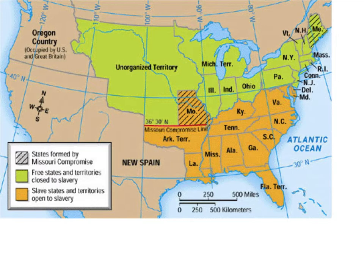The reason that balance matters is because each state has a certain number of senators and congressmen. If slave states outnumber free states, pro-slavery forces will control the agenda. Whereas if the Northern anti-slavery states like Pennsylvania, New York, and Massachusetts dominate the Senate and the House, anti-slavery policies will become the standard.